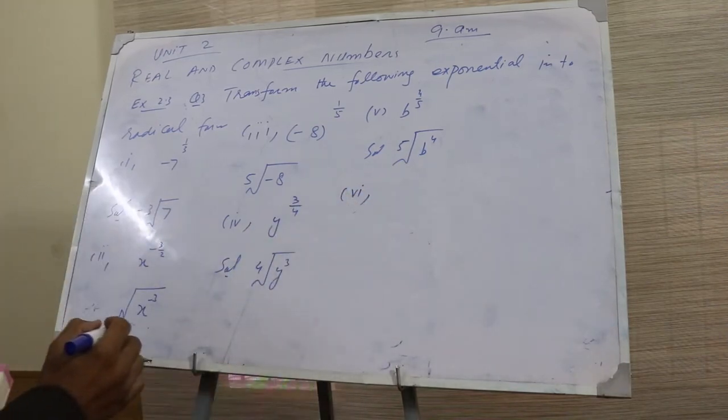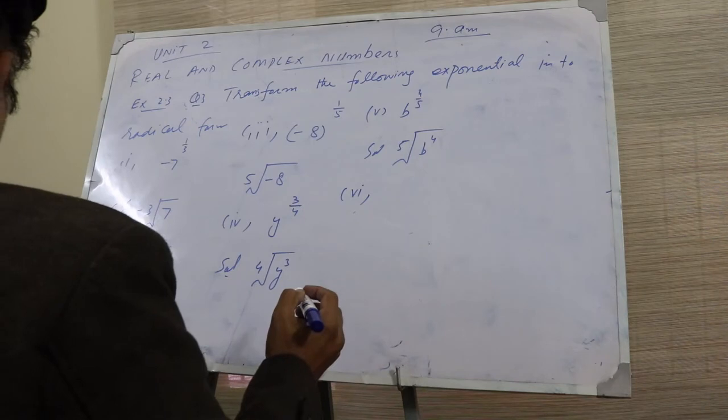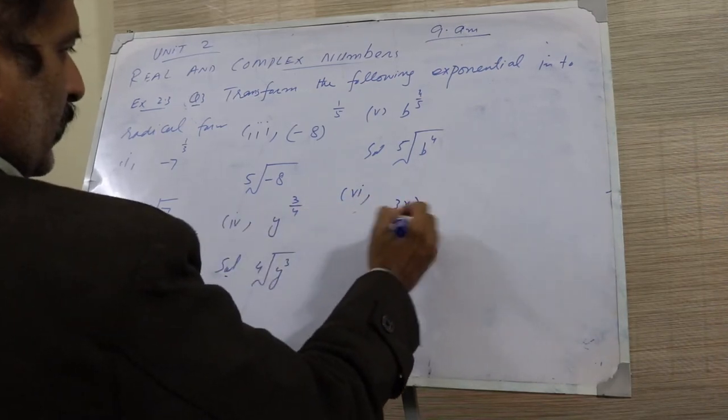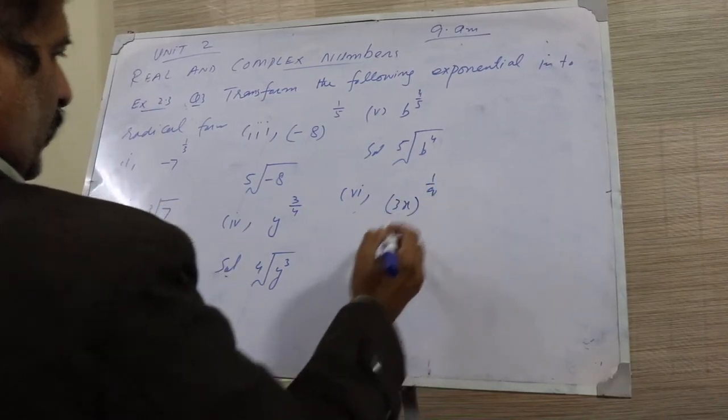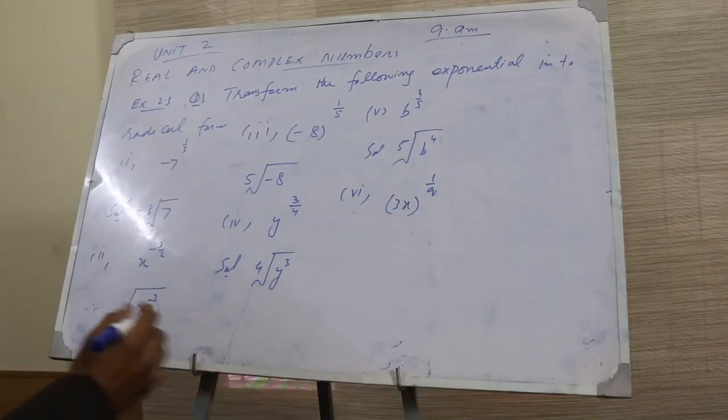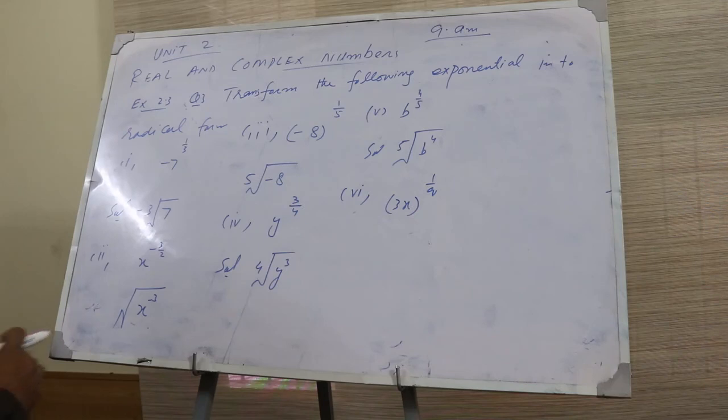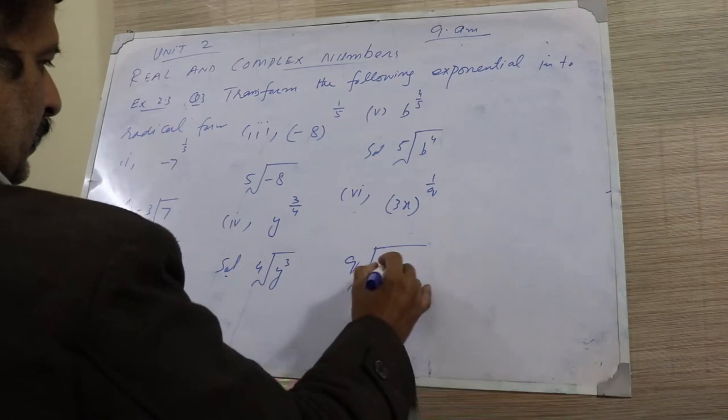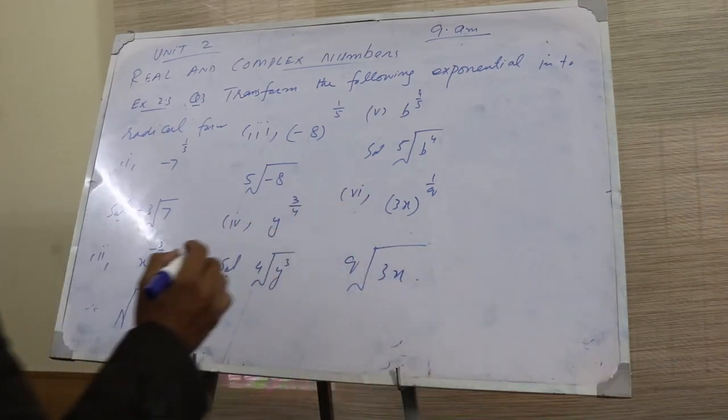Sixth and the last one: three x power one over q. This is qth root of three x.